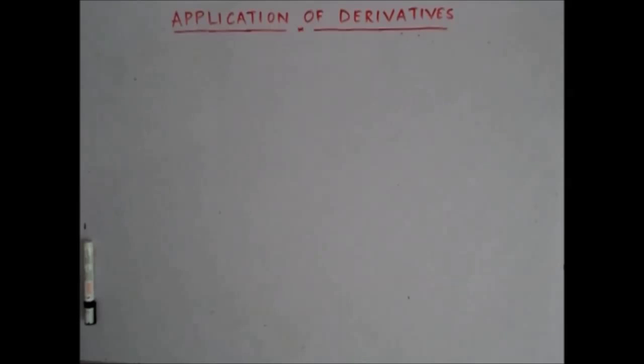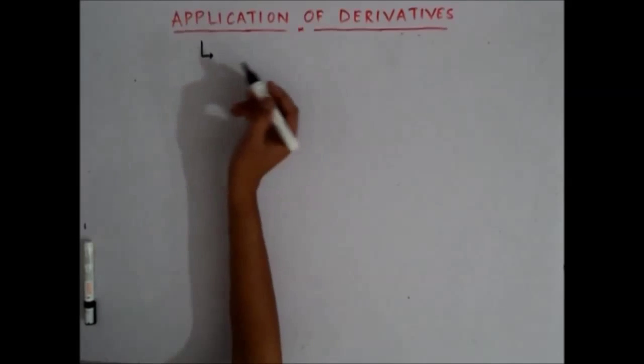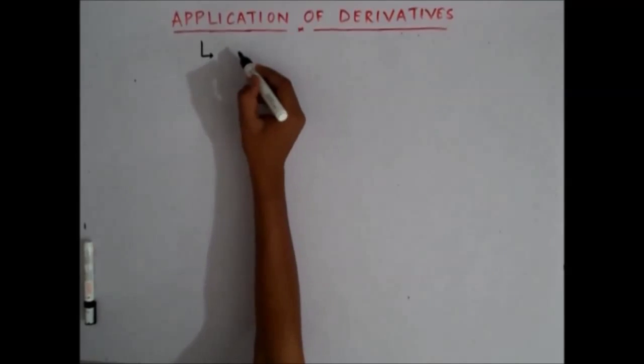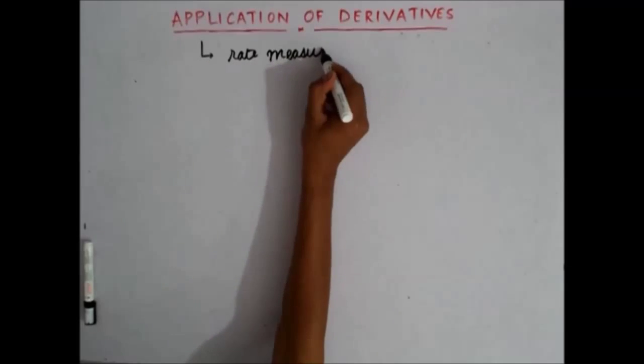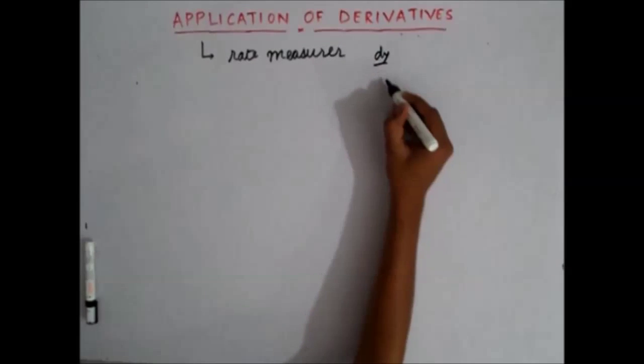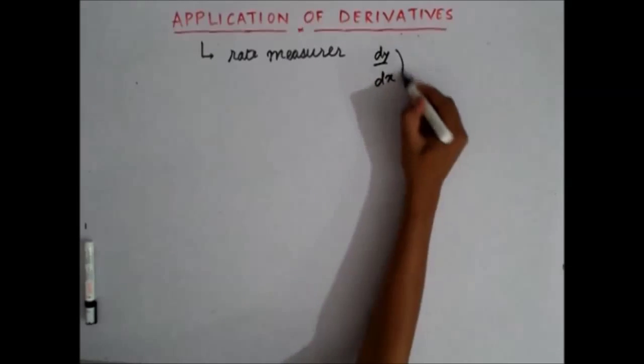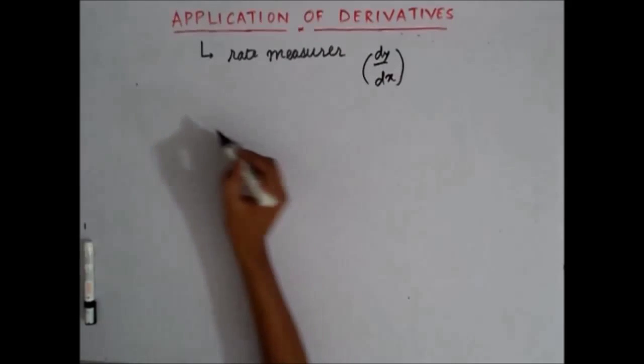Basically, this chapter is divided into three subparts. In this first subpart, we'll see the application of derivative as a rate measurer. That means, we'll see how derivative of dy by dx is used to find the rate of change.